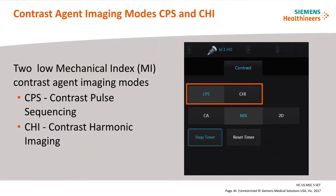When beginning a contrast exam, the first parameter that must be decided is the type of contrast imaging technique that will be used. In general, there are two contrast technique choices, each with different imaging benefits. Contrast pulse sequencing, or CPS, is a low mechanical index (MI) continuous real-time, non-linear imaging detection technique that provides contrast to tissue specificity. CPS is a fundamental imaging technique.